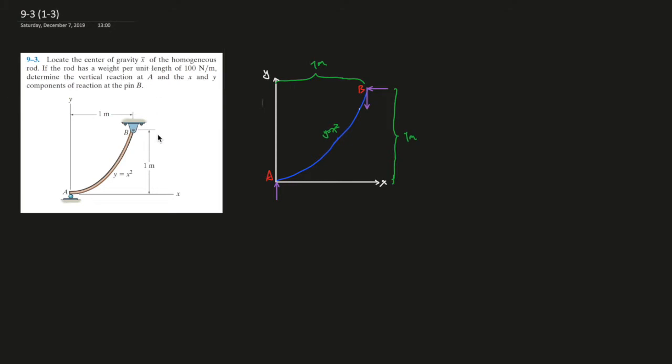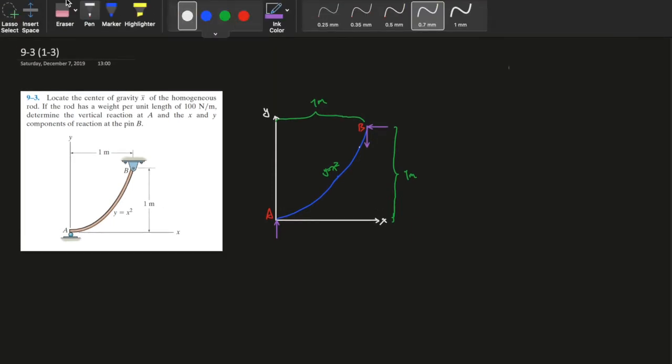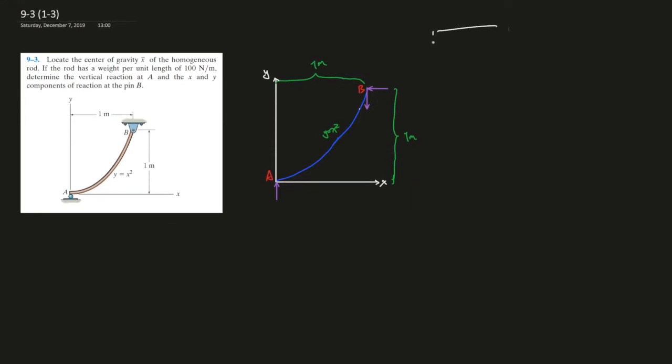So for the center of gravity of the rod, the equation you're probably going to use is from the book. The equation is 1 plus dy over dx squared dx, or 1 plus dx over dy squared plus 1 dy.